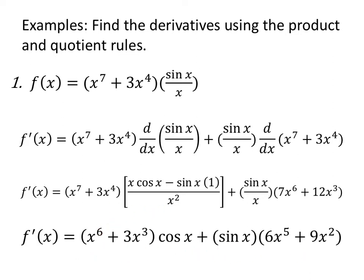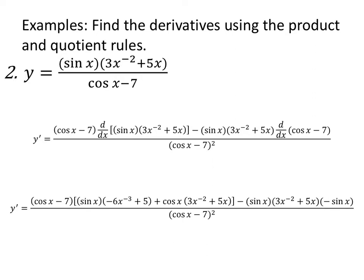Verify that I have simplified this correctly. I noticed the sine of x terms. We're going to combine terms from both pieces in order to find our final term. In this case, we have sine of x all multiplied by 3x to the negative 2 plus 5x, all of that divided by cosine of x minus 7.